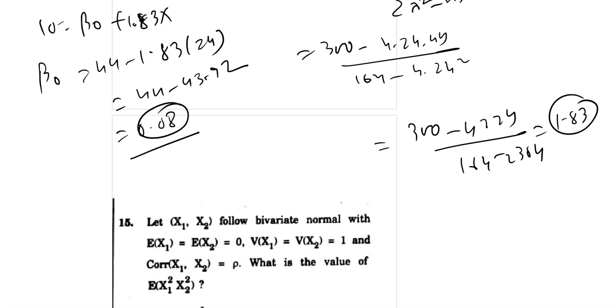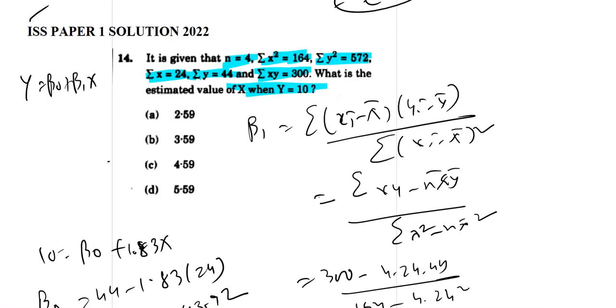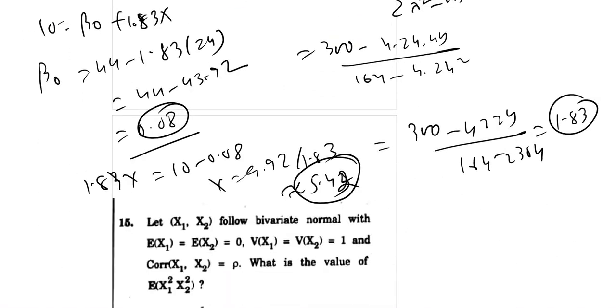So isis tariqe sa mung luk equations ko liqh sakte hain. x ka value ahaay ga here sae 1.83 x equal to 10 minus 0.08. So x equal to 9.9 to 1.83. So 5.42 is approximated value. The answer here, closest possible line point.